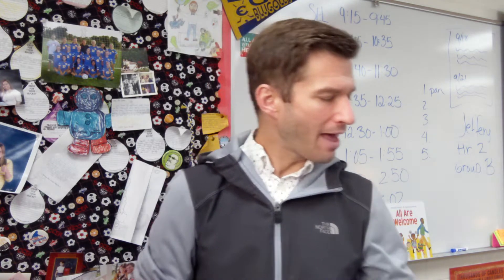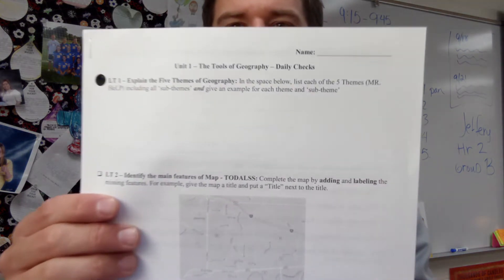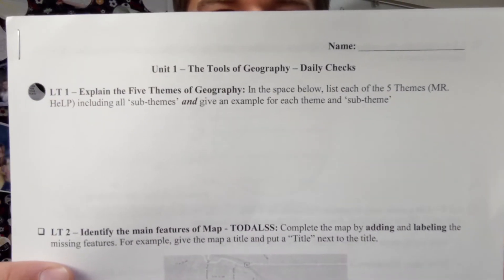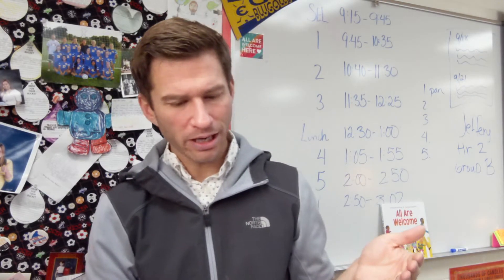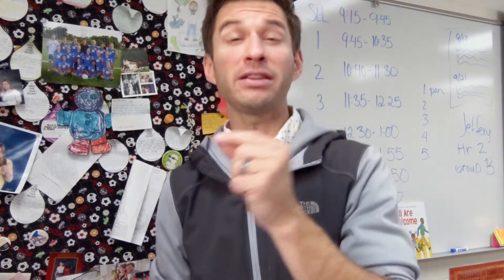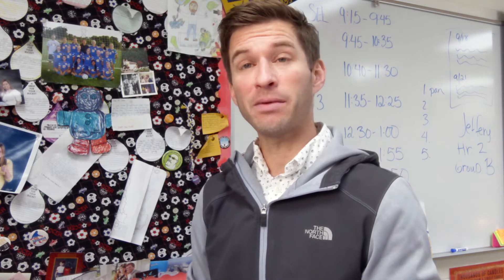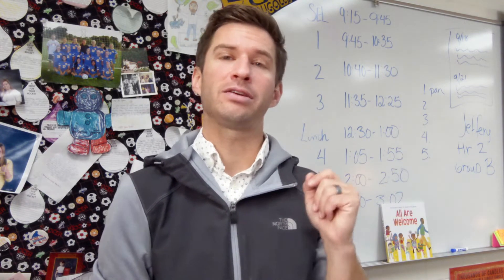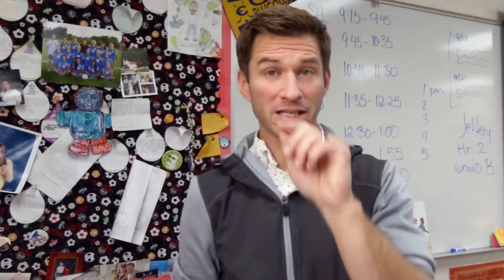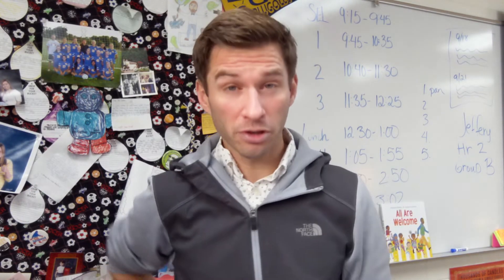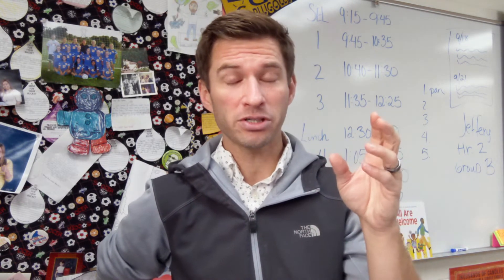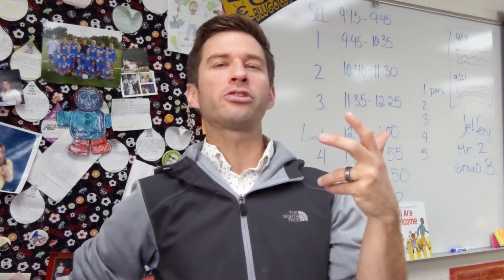You have all been given — or you should have — a sheet that says Unit One: Tools of Geography, Daily Checks. Today we're going to be focusing on targets one and two. Learning target number one is from last week and reads: explain the five themes of geography. In the space below, list each of the five themes including their sub-themes. For example, for location there is absolute location and relative location — you'd write those and then explain them. Target two is: identify the main features, the map totals — that builds off of today. These first two targets on your daily checks page should be done by the end of the day today. We're not collecting them yet, but they should be completed.